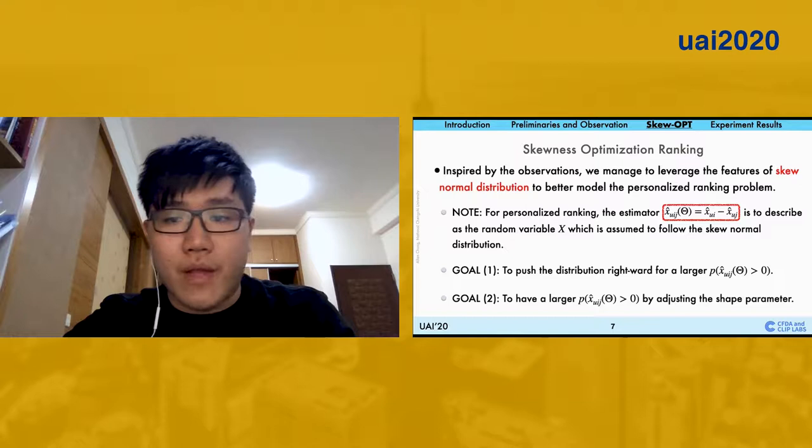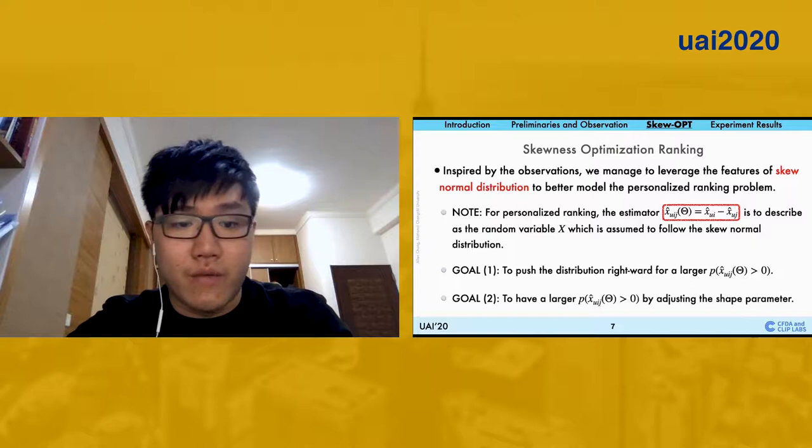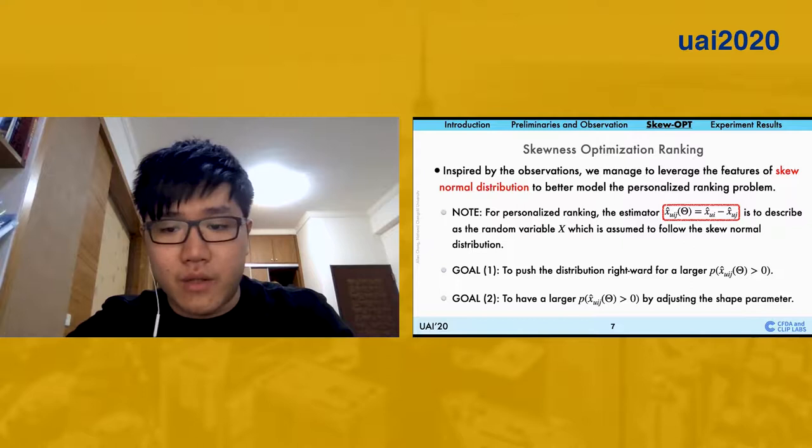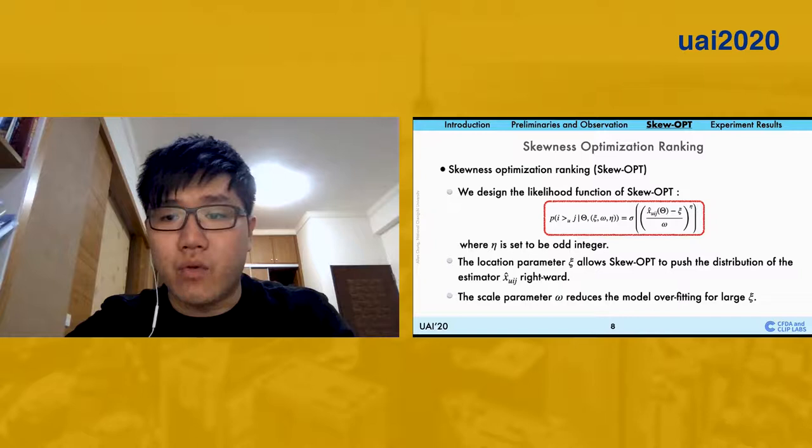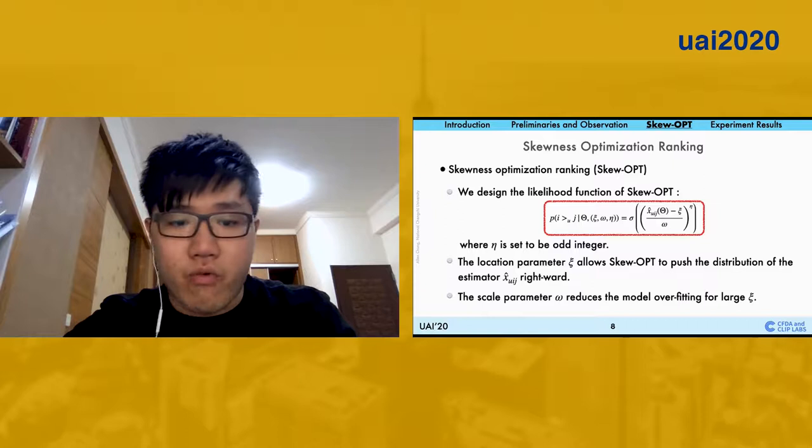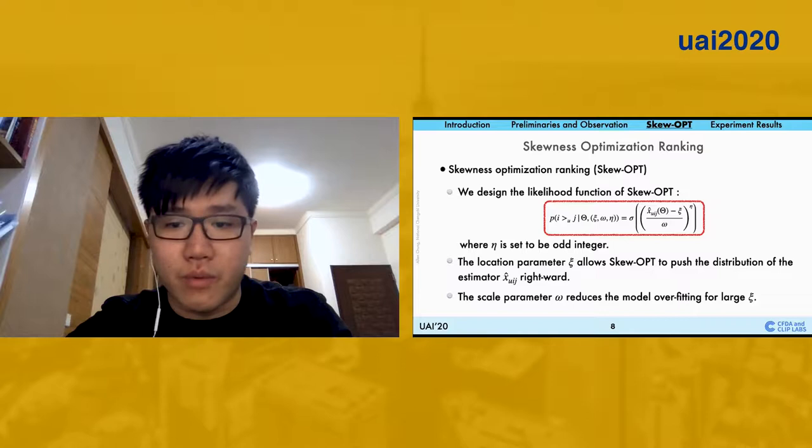We may now assume that the prior distributions of X_UIJ follow the skew-normal distributions in order to leverage the features of skew-normal distributions. To this end, we now try to re-case the likelihood functions to meet both goal 1 and goal 2. We re-case the likelihood functions referring to the individual probabilities that the user gives preferring item I to item J. We name that as skewness optimization, and the likelihood functions are motivated by the skew-normal distributions.